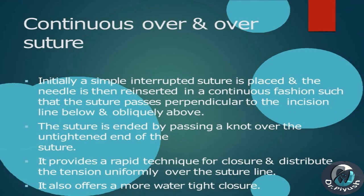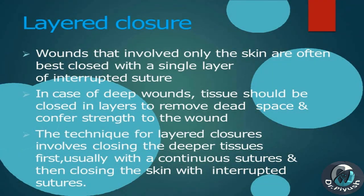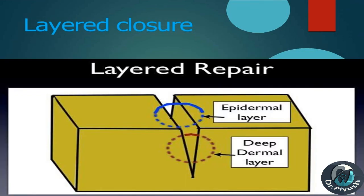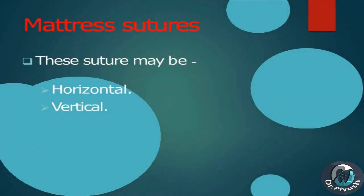Continuous over-and-over suture: initially a simple interrupted suture is placed, then the needle is reinserted in a continuous fashion so the suture passes perpendicular to the incision line below and obliquely above. The suture is ended by passing a knot over the untightened end. It provides rapid closure, distributes tension uniformly, and offers a more watertight closure. Layered closure: wounds involving only the skin are best closed with a single layer of interrupted sutures. For deep wounds, tissue should be closed in layers — deeper tissues first with continuous sutures, then skin with interrupted sutures.